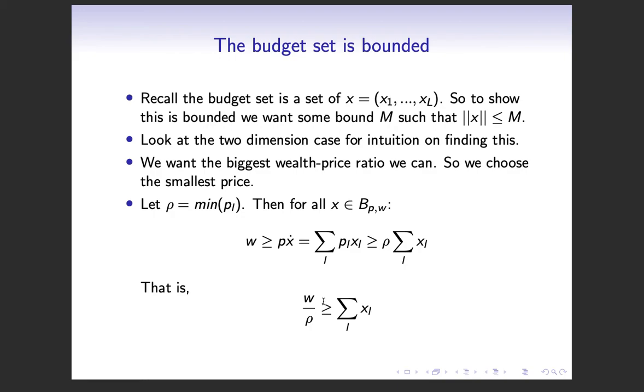Now, what is this? This actually gives us information about the maximum size of each XL. Because this is a sum of positive, or at least non-negative numbers, we know that at most the biggest XL could be w over rho. So we're going to use that in a minute. Remember, if you're adding up non-negative terms, the biggest term here, assuming every other one is 0, the biggest it could ever be is w over rho.